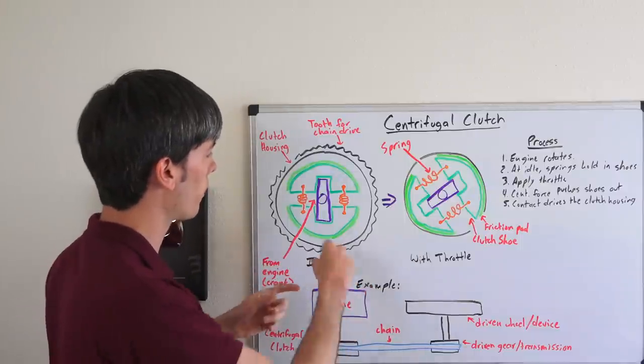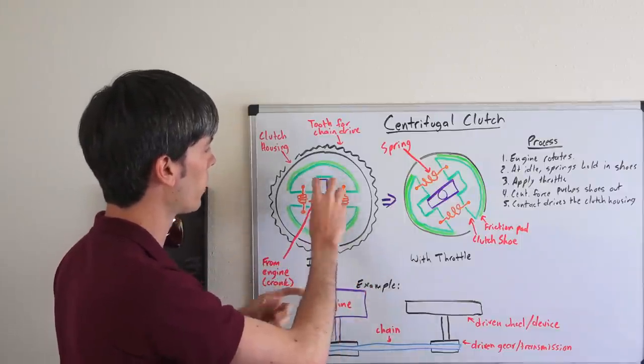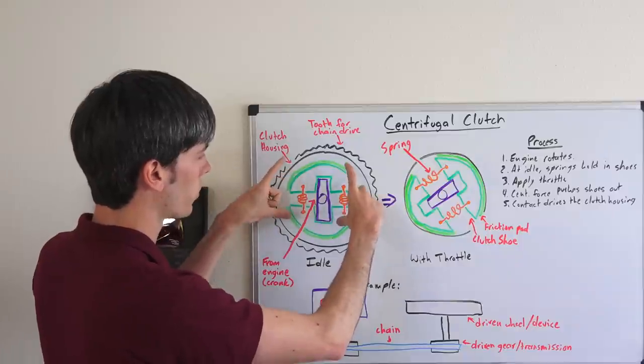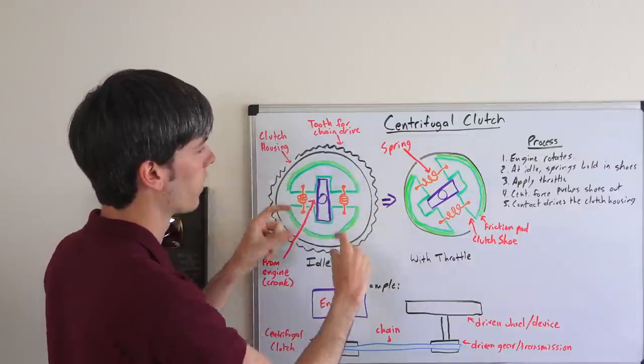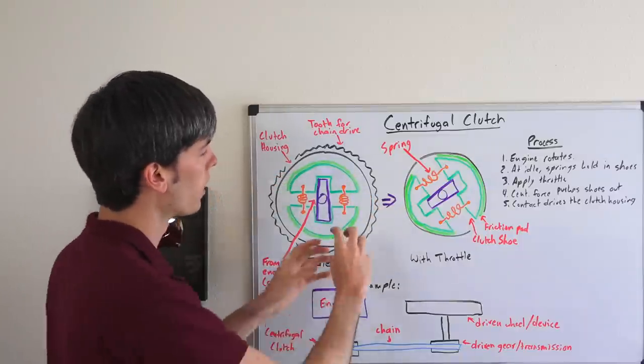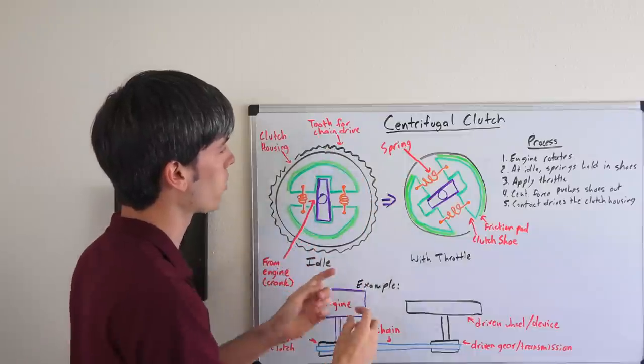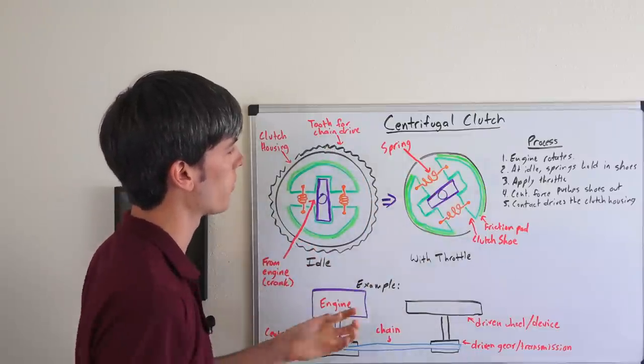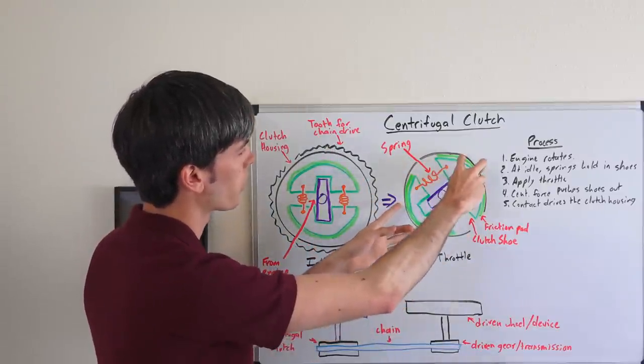But essentially what happens is when you're at idle, your engine speed is low enough at which the centrifugal force isn't enough to overcome these two springs. So the springs will hold the clutch shoes together. As you apply more throttle, those springs aren't going to be able to hold them in quite as much as this starts to rotate faster. And so these clutch shoes are going to go out.